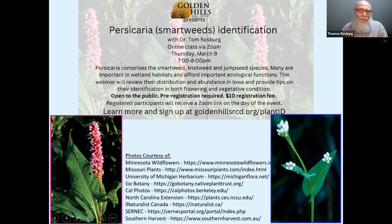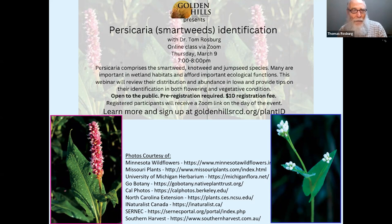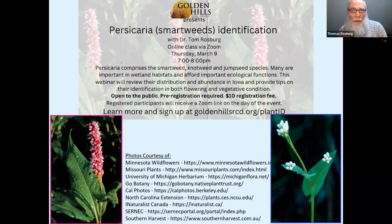We're looking at Persicaria — this is a revised genus for the smartweeds. You may know it under Polygonum and others. You'll see in the table I put together that it used to be under Polygonum, but Polygonum was split in Flora of North America (FNA) into the knotweeds, which are Polygonum, and Persicaria, which are the smartweeds.